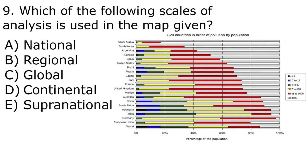The correct answer is A, national. We're looking at data per country, and that's what scale of analysis is — what we're comparing data to. We're comparing and contrasting data per country, meaning we're looking at a national scale of analysis. We are not looking at a global scale of analysis because the data is confined to a country. Global scale of analysis is where data is not confined to a specific area.